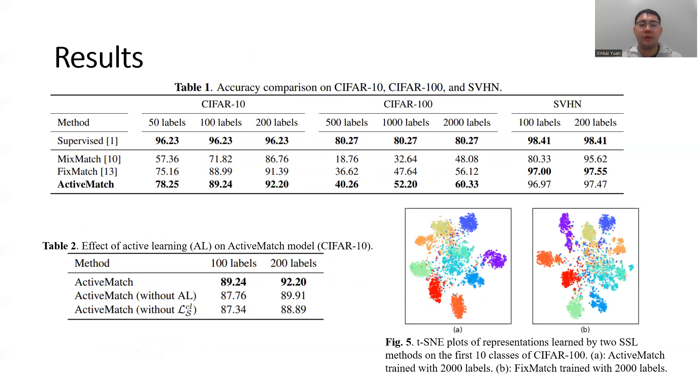This page shows the performance of ActiveMatch in the image classification task. For table 1, we used our model to learn representations for images, and then do the image classification task on standard semi-supervised learning benchmarks, such as CIFAR-10, CIFAR-100, and SVHN, with different numbers of total labeled training samples.